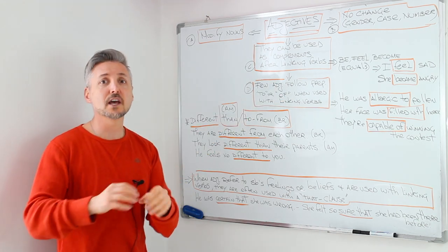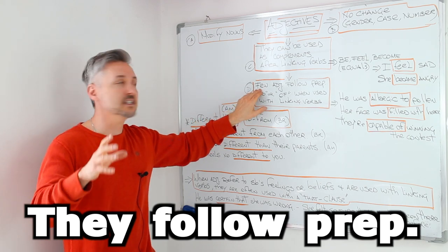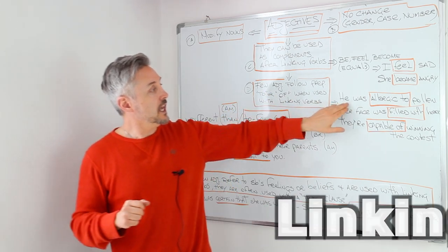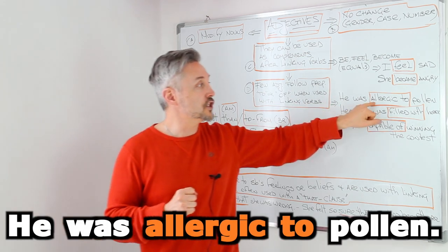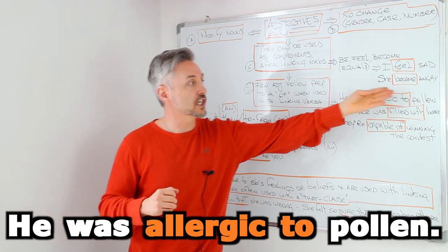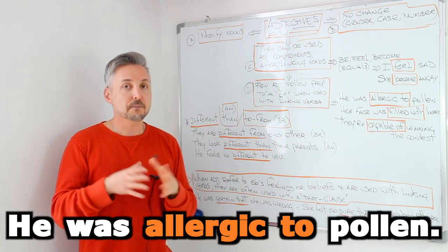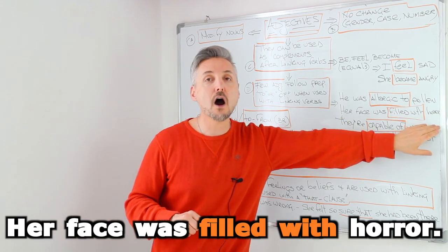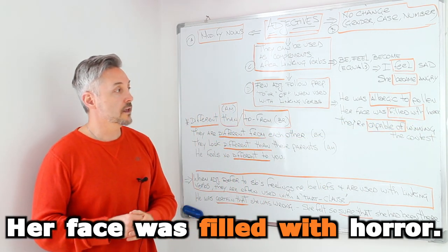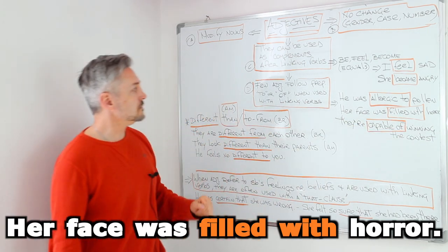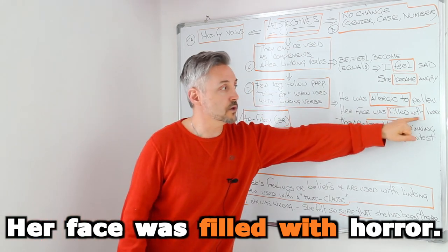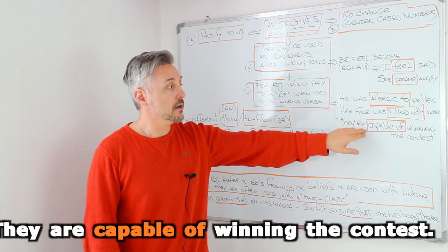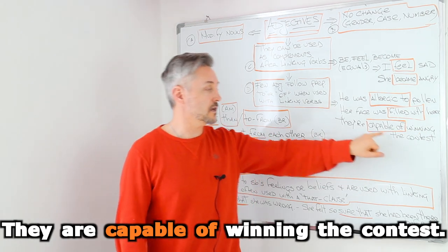So the other point that I want to talk about with the linking verbs is that few adjectives follow prepositions like to or of when used with linking verbs. For example, he was allergic to pollen. So the adjective allergic is followed by the preposition to. The second example that I listed here, her face was filled with horror. The adjective right there is filled and then the preposition with. Then there is another example. They are capable of winning the contest. Capable of.